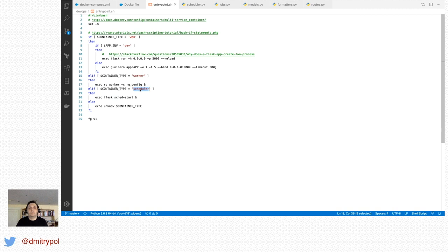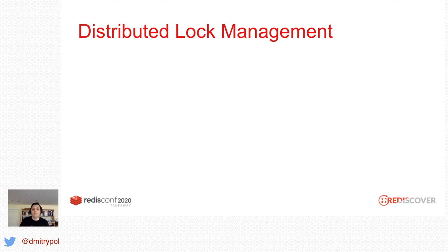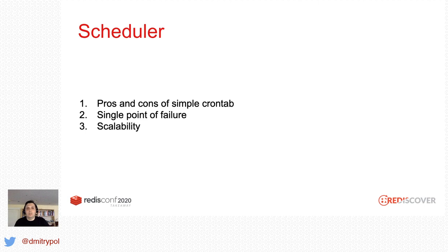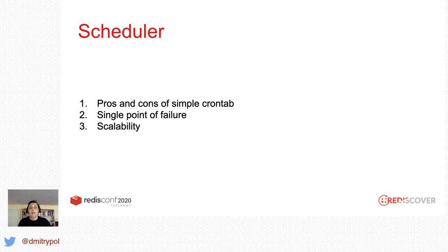Let's talk about distributed lock management. Why do we even need it? Why not use something simple like crontab? Crontab is a great tool, but it has limitations. It can be a single point of failure — if the crontab process or the server running it crashes, nothing will execute. It can also be a scalability issue as we run more and more jobs and reach the limits of a single server. We can solve scalability by separating job scheduling from execution, where the crontab scheduler puts jobs in a queue and multiple workers on different servers execute them in parallel. But that doesn't solve the single point of failure.